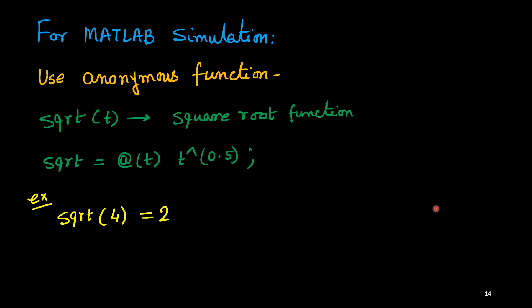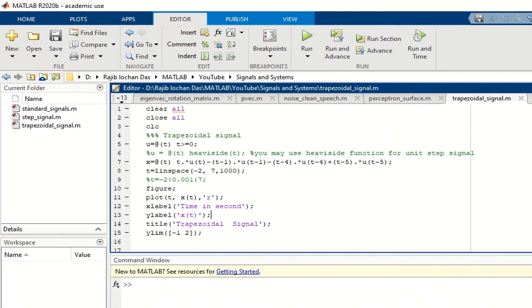So we will go to MATLAB window. So this is your MATLAB window. Now here you will see this is my code, trapezoidal_signal.m file. So this is a good one, I'll discuss this MATLAB code in detail.